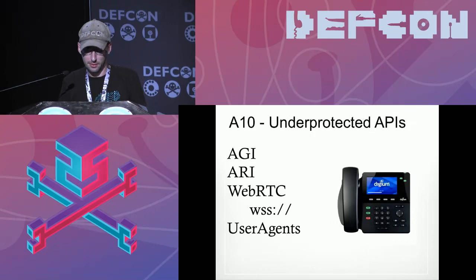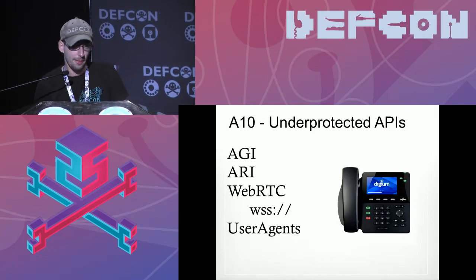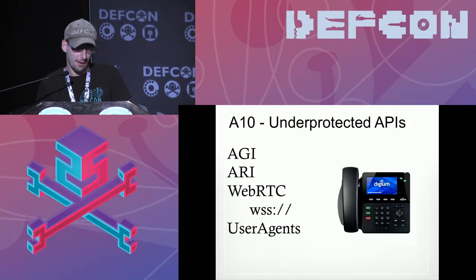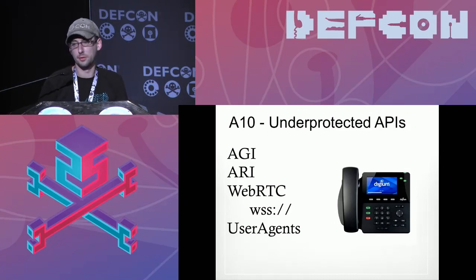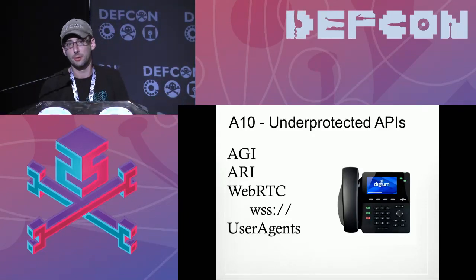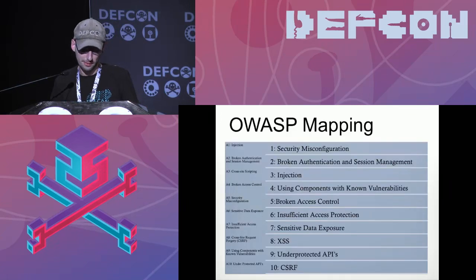Under-protected APIs is new in the 2017 OWASP Top 10. The AGI — Asterisk Gateway Interface — sits internal to the PBX and isn't an externally facing API, but may lack controls. The ARI — Asterisk RESTful Interface — often sits on the web. WebRTC is coming up more and more, and you'll see a lot of web sockets misconfigured — there's a huge attack surface there because it hasn't had as much testing. Some SIP phones run JavaScript natively and expose JSON APIs.